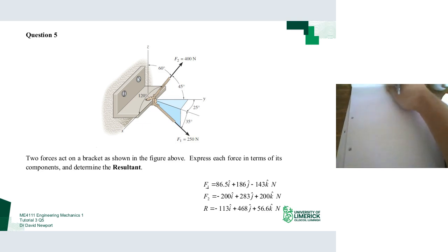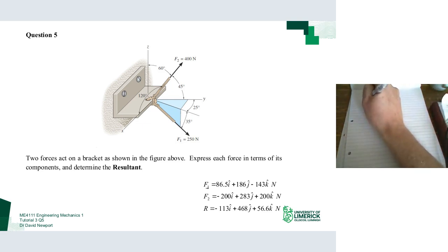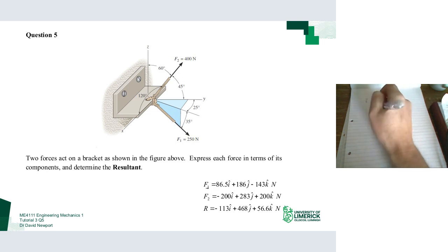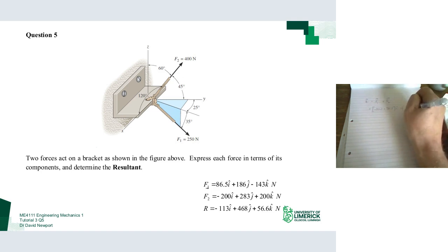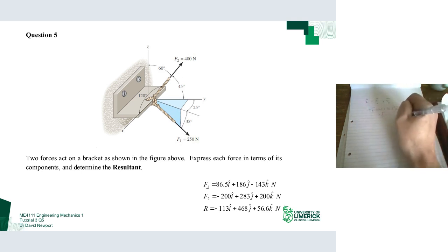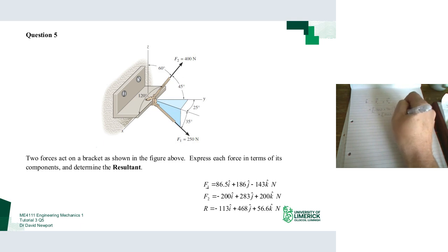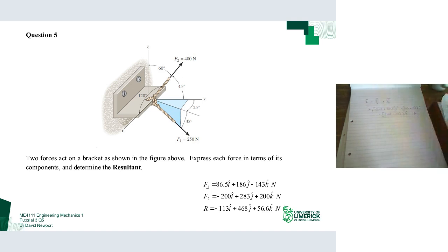The resultant in vector form is F1 plus F2. For i-hat: minus 200 plus 86.5. For j-hat: 203 plus 186. For k-hat: 200 minus 143. Adding those together gives the final resultant as expected.